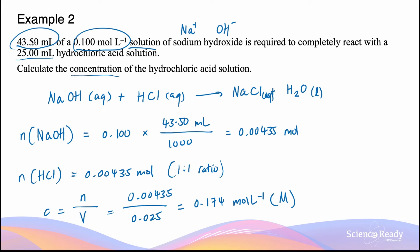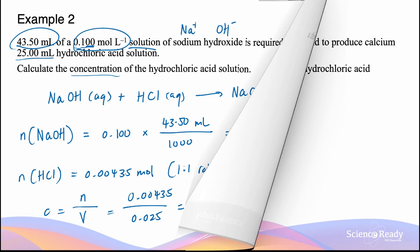Looking at the significant figures: 43.50 is 4 sig figs, 25.00 is also 4 sig figs, and 0.100 is three significant figures because the two trailing zeros after the decimal point are significant. So the final answer is left to three significant figures.